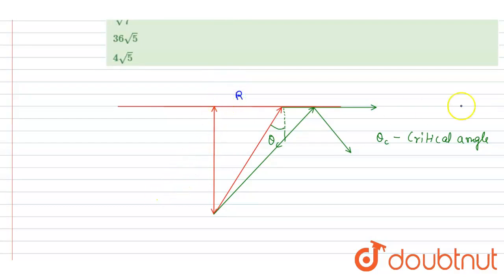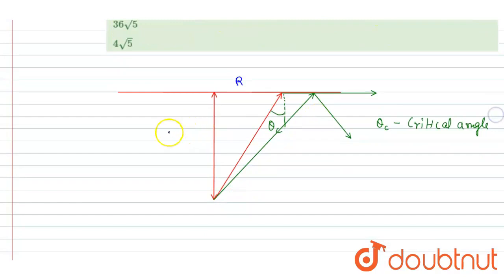So it will be a circle of radius r, and r you can calculate since you know that this distance is 12 centimeter, h is 12 centimeter, and this is theta c.